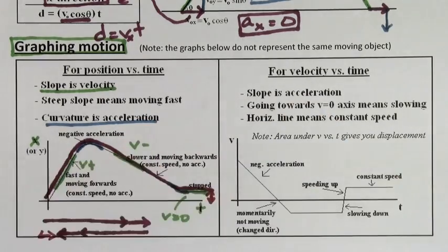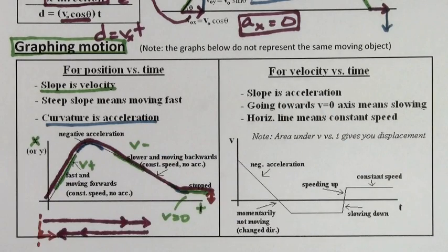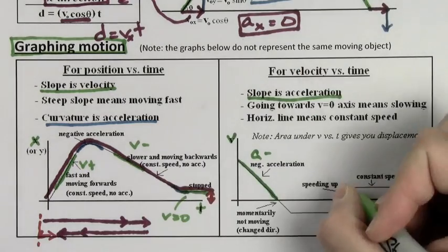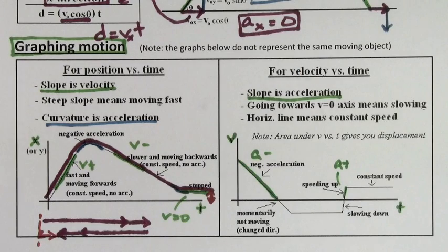On a velocity versus time graph, the slope is the acceleration. So negative slope, negative acceleration. Positive slope, positive acceleration. And if there's no slope, the acceleration is zero, which means you're maintaining constant speed.